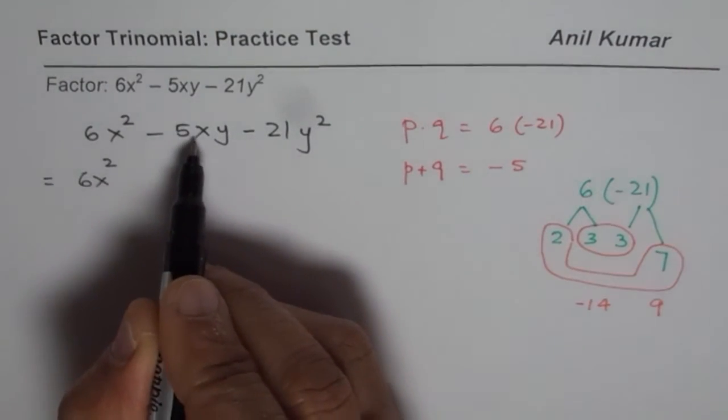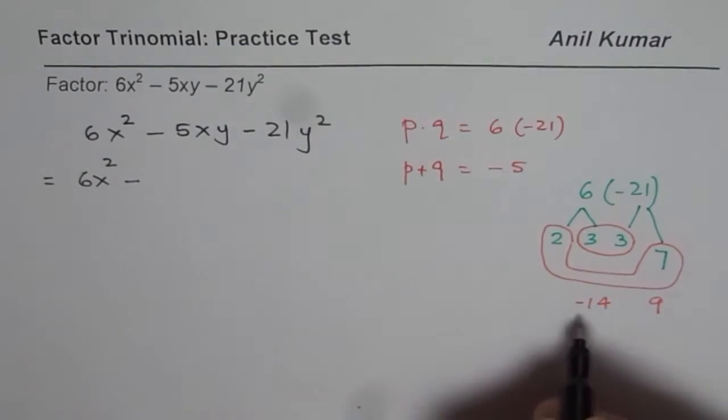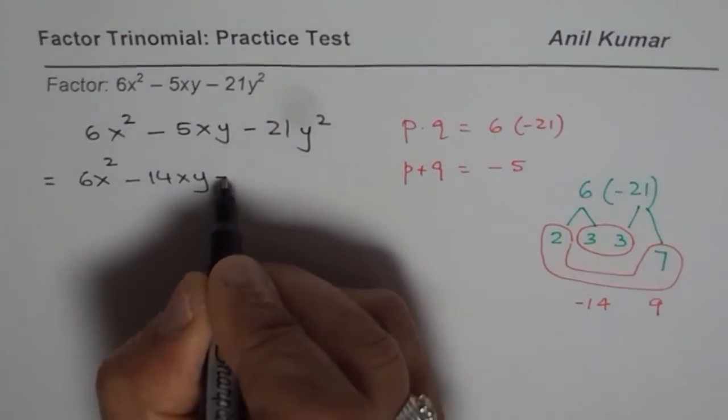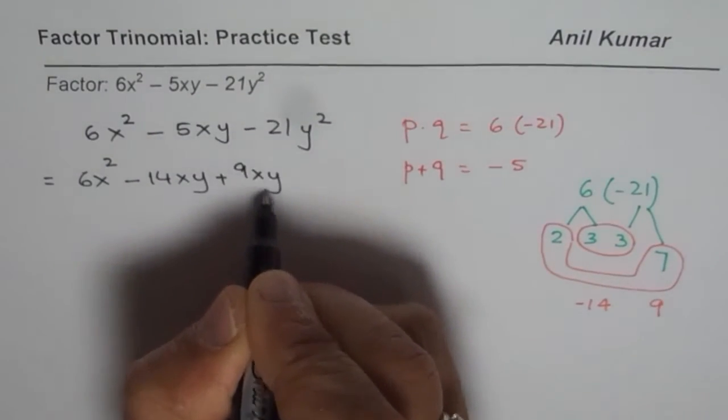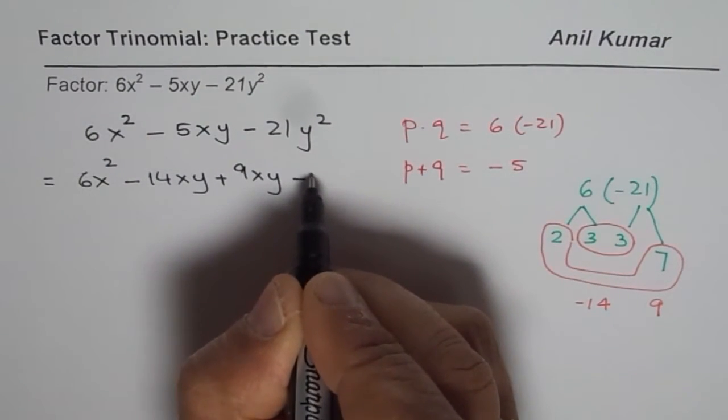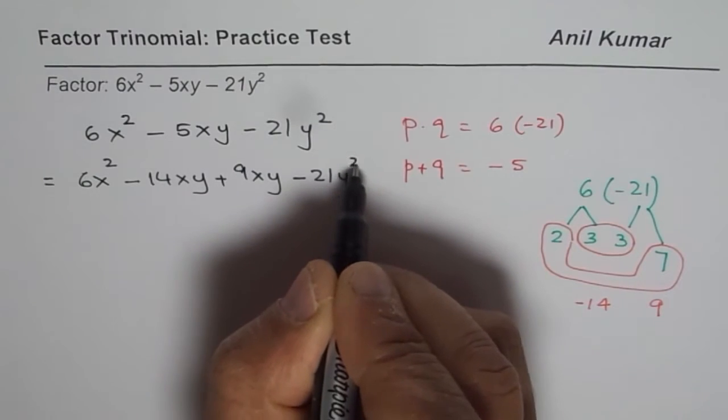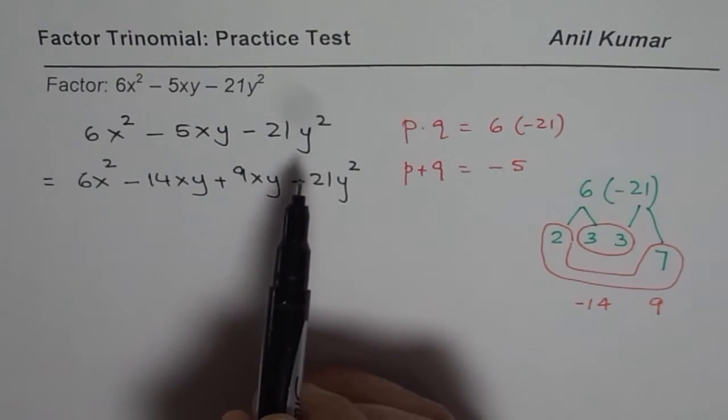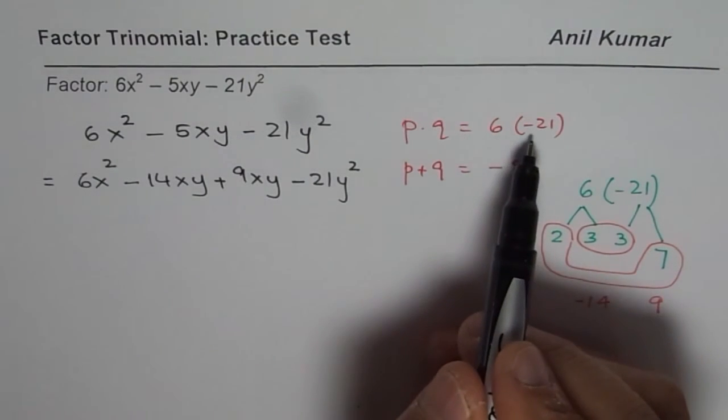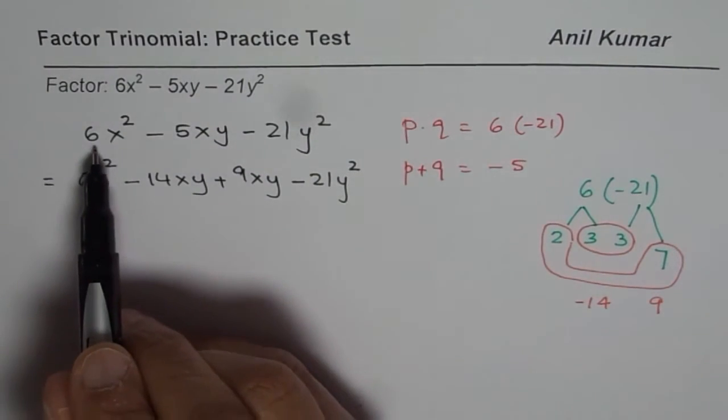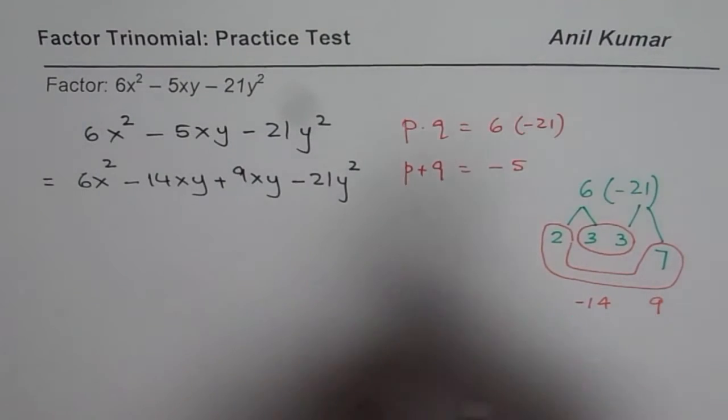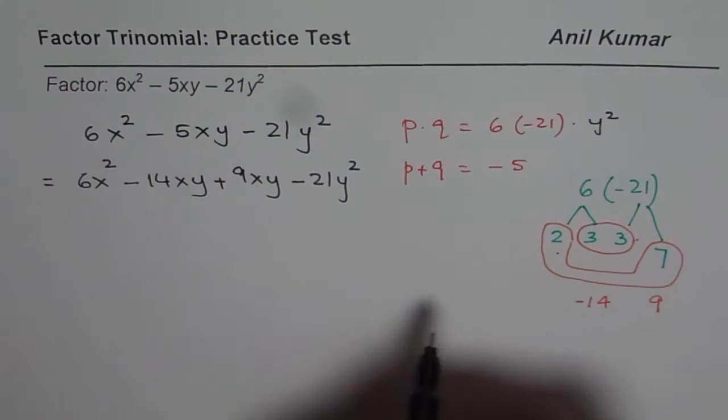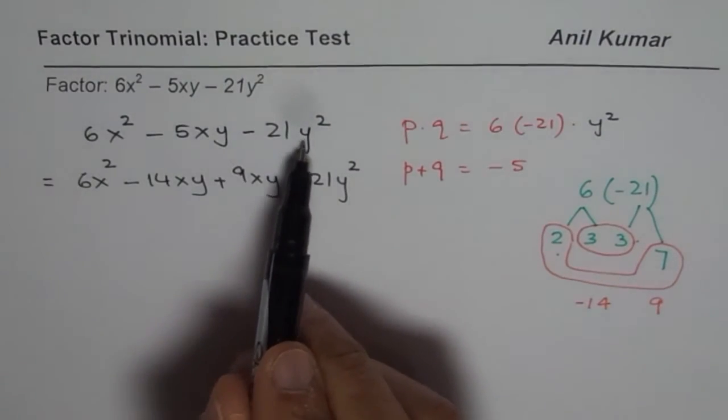We will write -5xy as a combination of -14xy and +9xy. And here we have -21y². So remember to use y also along with it. Strictly speaking, the product which we are looking for is 6 times 21y². It is actually times y². So we have to use y with each term so that we get y².